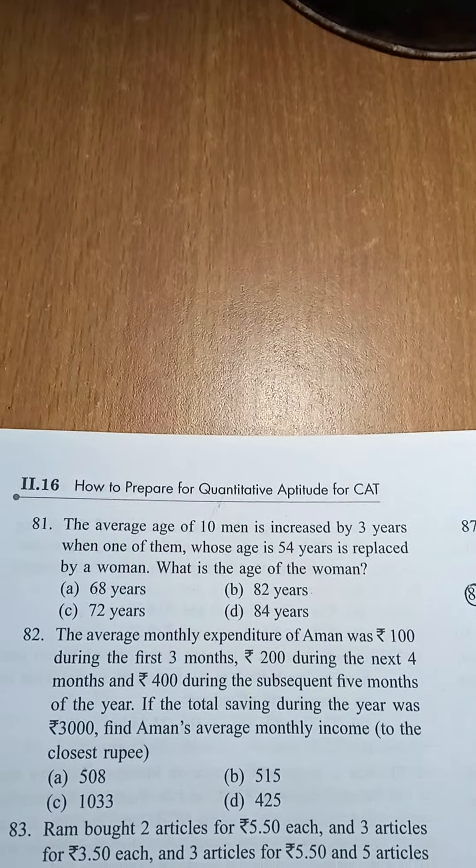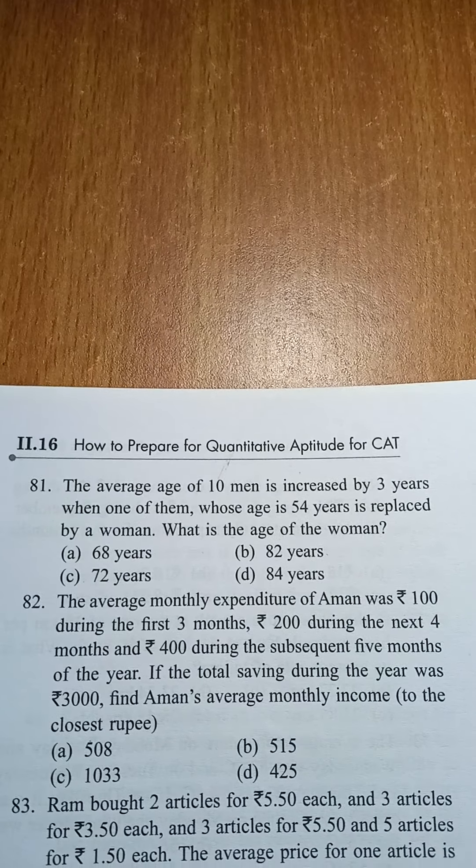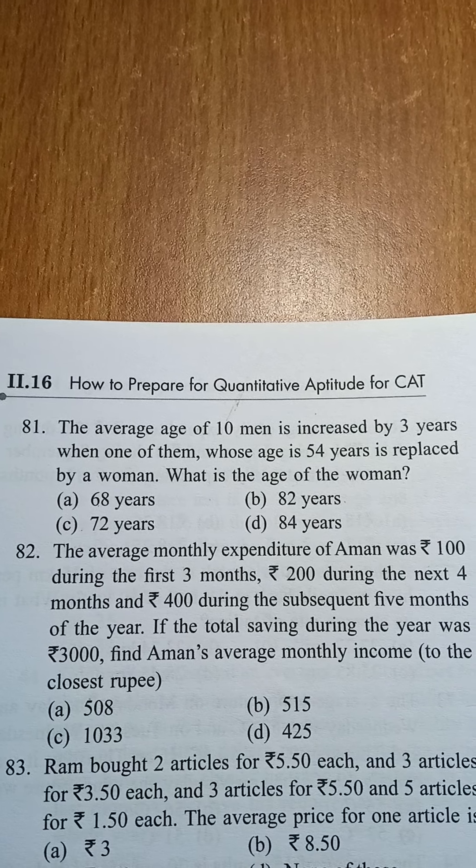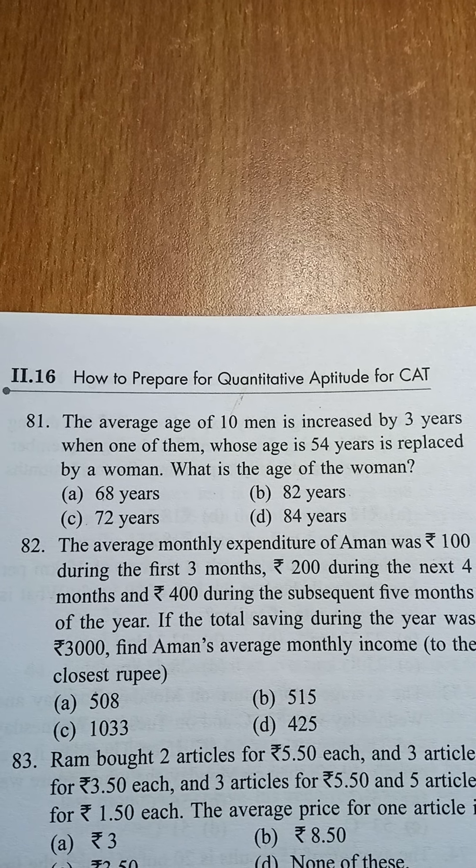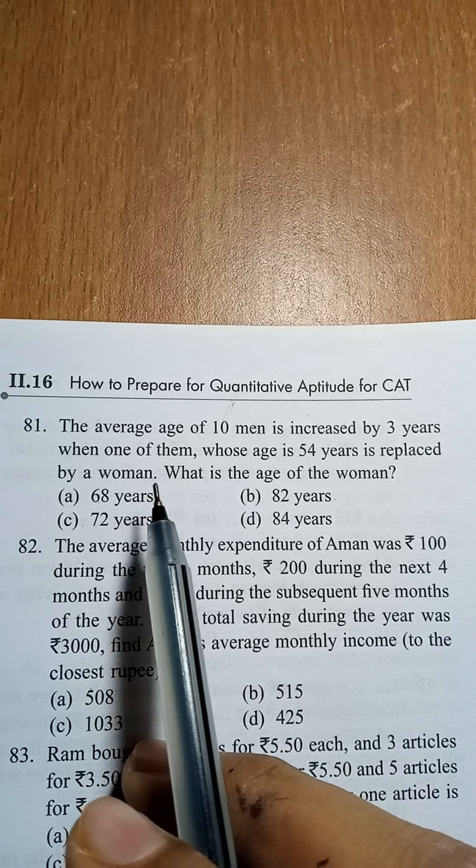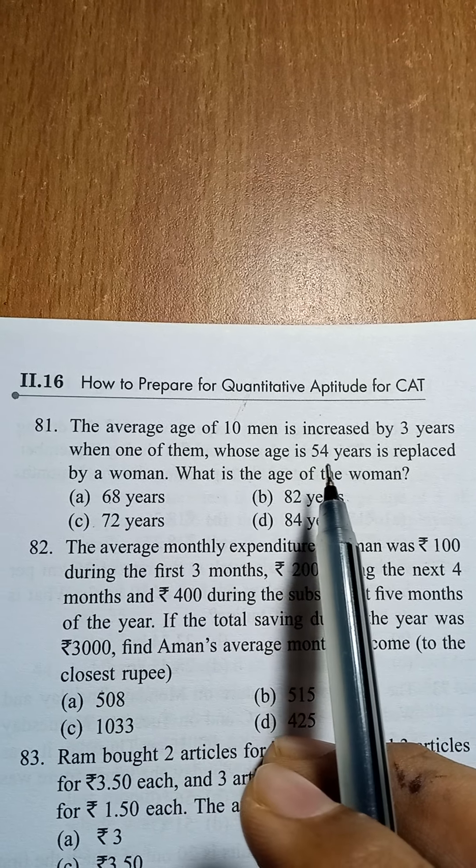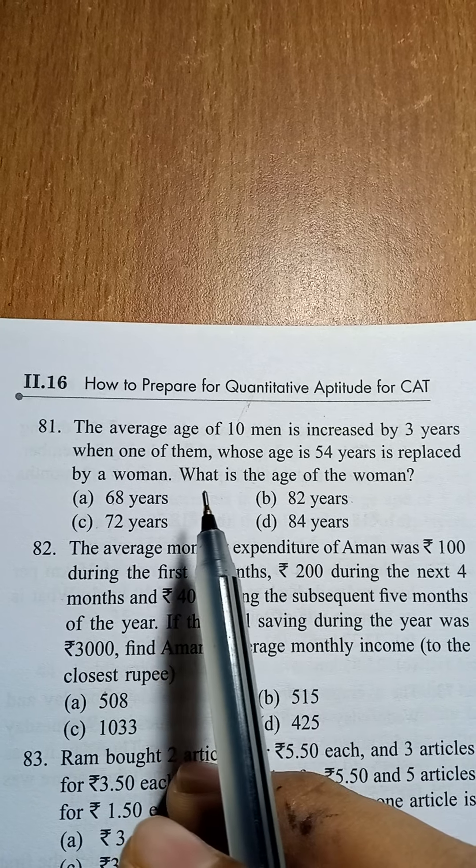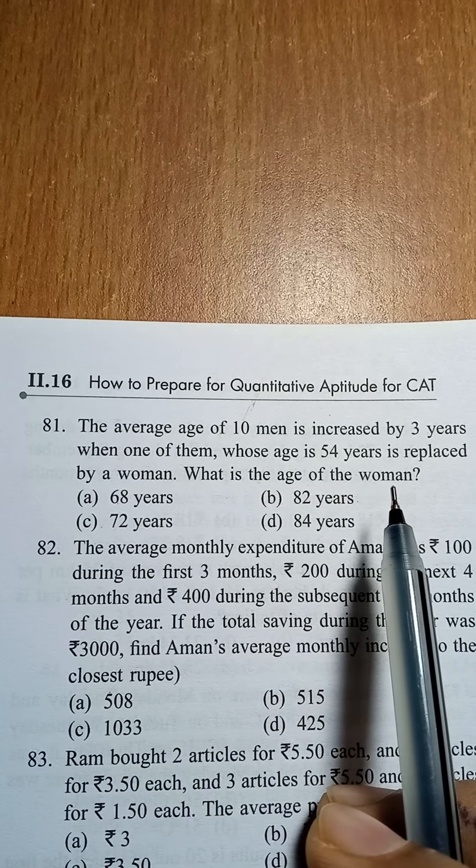Hello everyone, today we are going to solve question number 81 of Arun Sharma book, averages chapter. The average age of 10 men is increased by 3 years when one of them, whose age is 54 years, is replaced by a woman. What is the age of the woman?